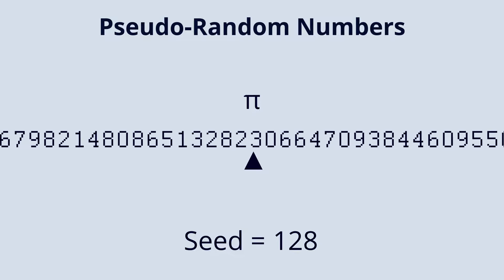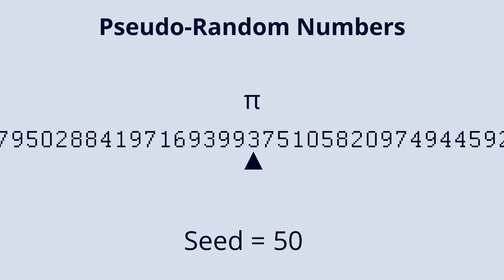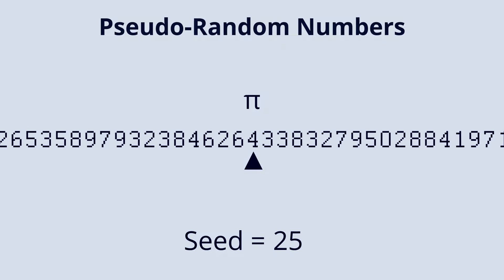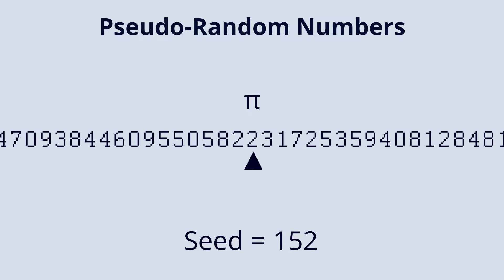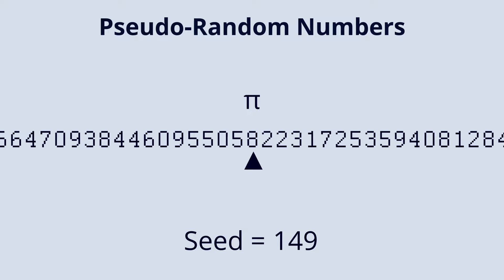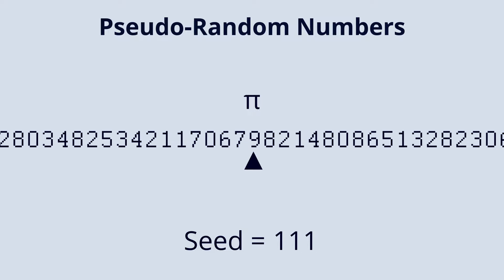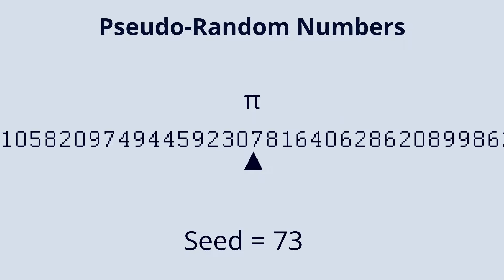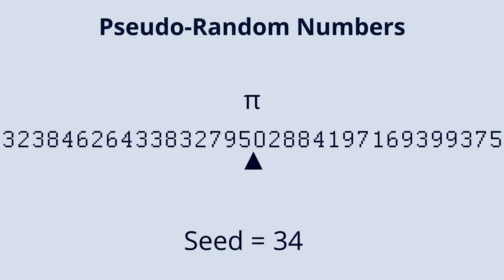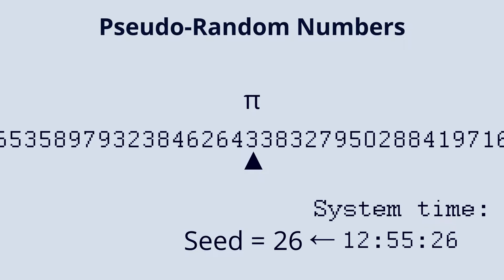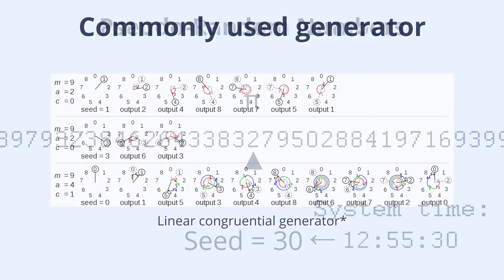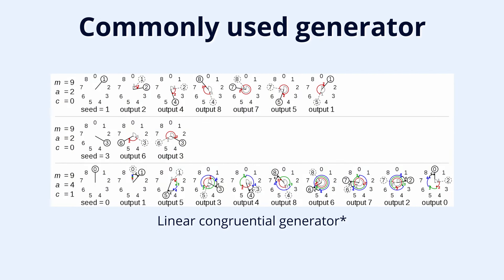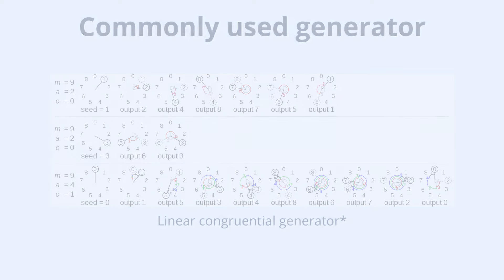So for our little pi generator, let's say our seed determines where we start in the sequence. This means that if we use the same seed, we will get the exact same sequence of numbers every time. So if we want random numbers every time we use our generator, we will need to use a different seed. Usually the current system time is used as a seed to get a different sequence every time we run our generator. Of course in reality more complex and unpredictable formulas are used to get these random numbers, but the basic principle is the same.